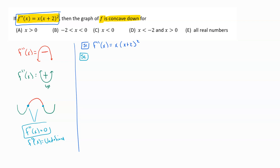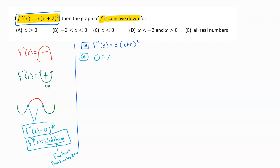We want to find when the second derivative equals zero or when it is undefined. The undefined situation you really only have to worry about when you're looking at fractions and when you would get division by zero. For us, we don't have any fractions, so we're really looking at the straightforward idea of whenever this equals zero.